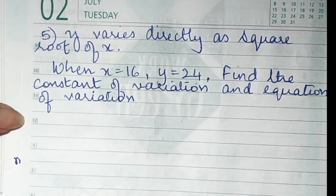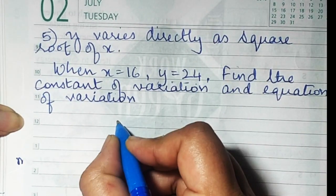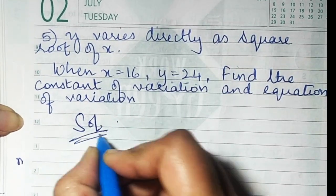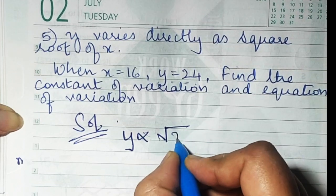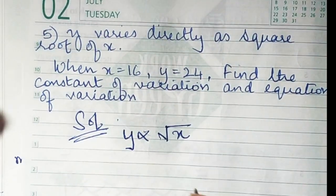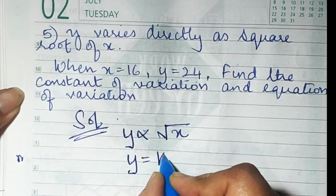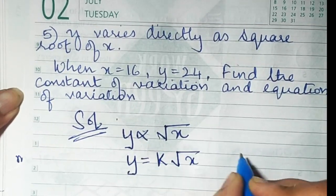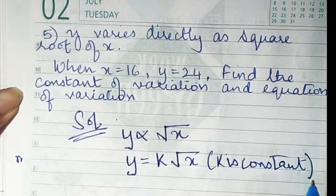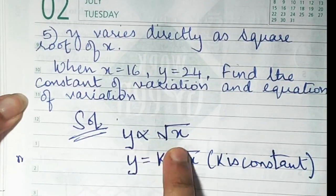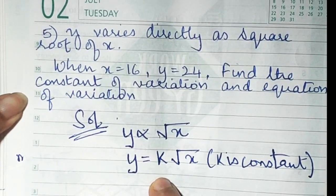Sum number 5: y varies directly as the square root of x. So y is directly proportional to the square root of x. Therefore y equals K root x, where K is constant. Write this line first, then solve. Y is directly proportional to root x, so y equals K root x where K is constant.